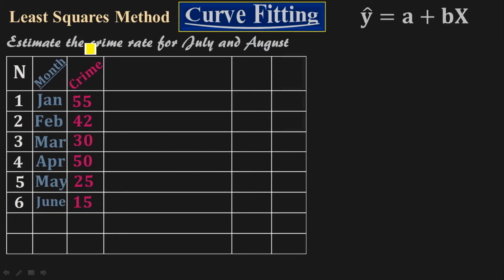Since this method is for an even number of points, you have to work with an even number of points — you don't use an odd number. We are dealing with an even number of points: 1, 2, 3, 4, 5, 6. We have data for January through June, but we don't know the crime cases for July and August, so we have to do the estimation.